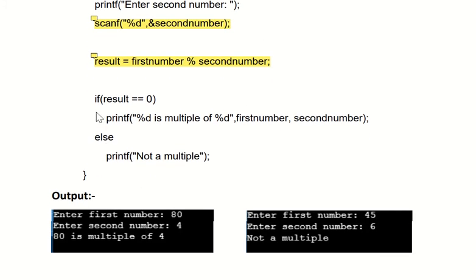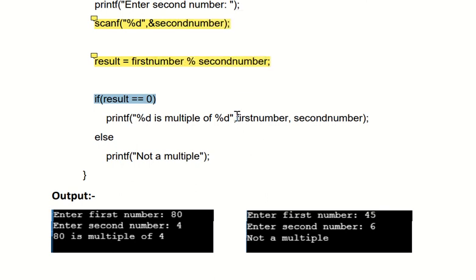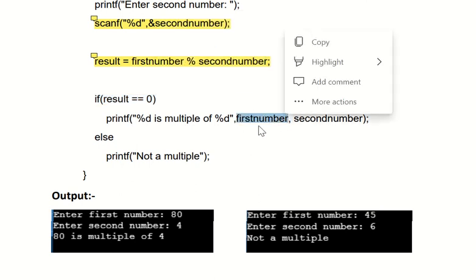Now here we have if condition, if result equal to equal to 0 then we can say that first number, that is whatever you have entered, first number is 80, 80 is multiple of second number is 4, so we can say 80 is multiple of 4.